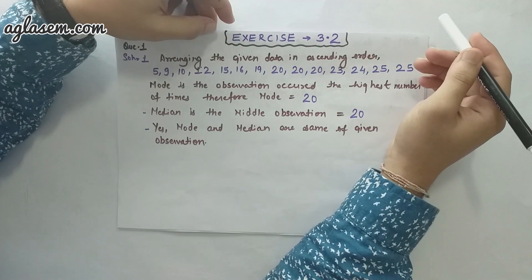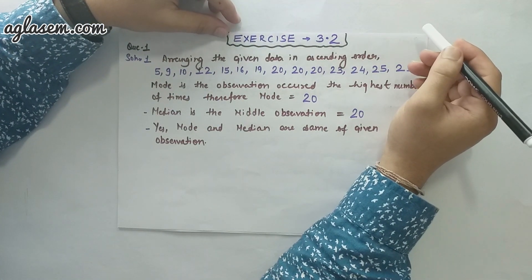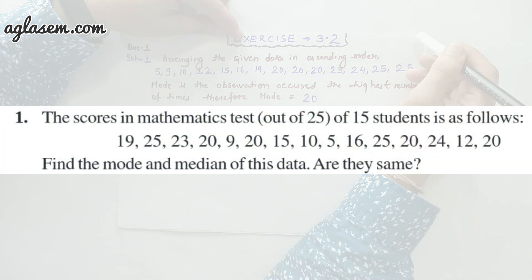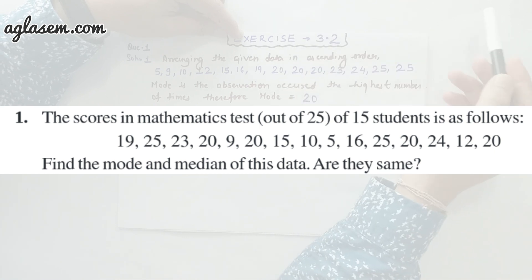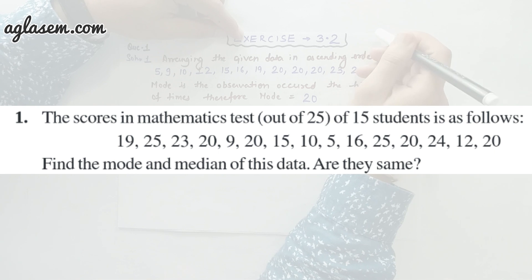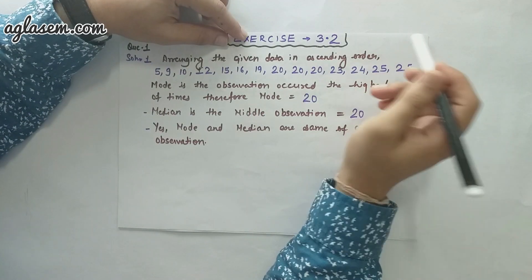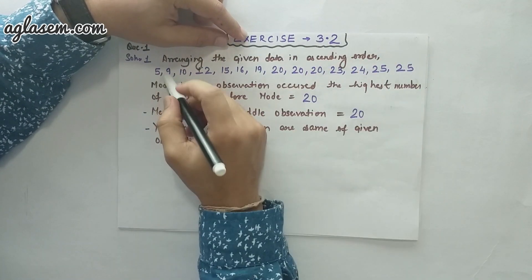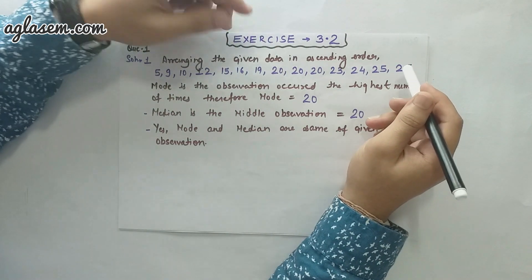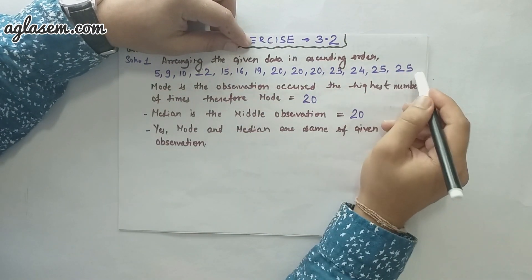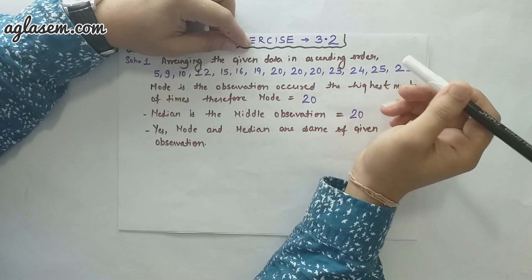Let's start with the questions. This is exercise 3.2 and now we move forward to the first question. The first question is: the scores in a mathematics test out of 25 of 15 students are as follows — you can see the data on the screen. We have to find the mode and the median of this data and also see if they are the same. To make it easier, arrange the data in ascending order, which means smallest to the greatest. This will help you solve the question.